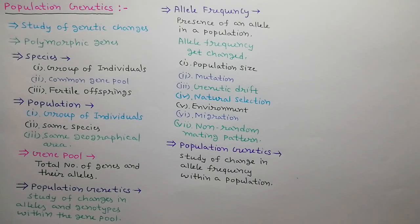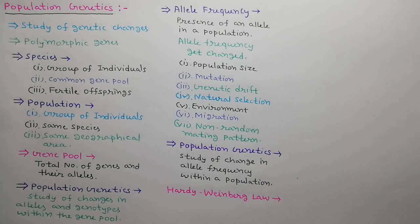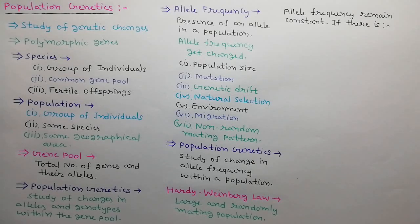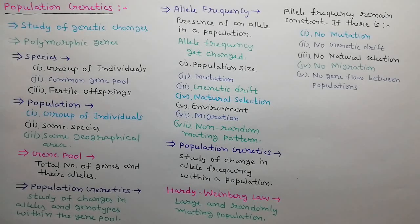Hence, in population genetics, we study about the change in allele frequency in a population. Now, we will discuss about the Hardy-Weinberg law, which is associated with population genetics. According to this law, in a large randomly mating population, allele frequency does not change or remains constant if there is no mutation, no genetic drift, no natural selection, no migration, and no gene flow between populations.